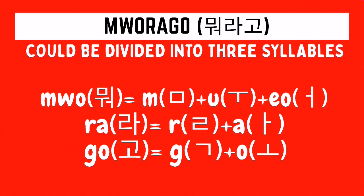Looking back to the first syllable, if you would notice, the wo sound is formed by combining u and o. And that is how usually the w sounds are made in Hangul — it is by combining the vowel sounds. Again, that is how you write porago in Hangul.